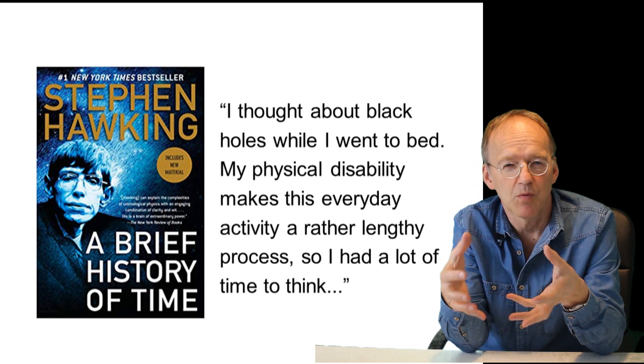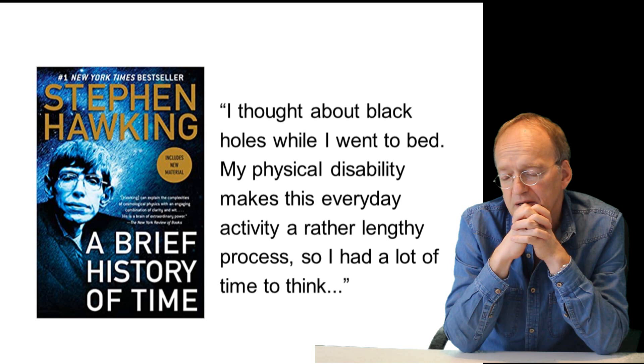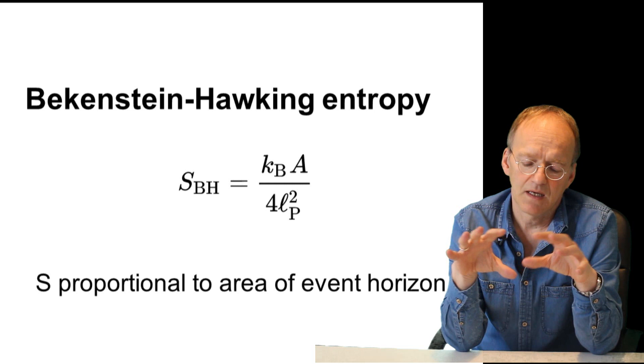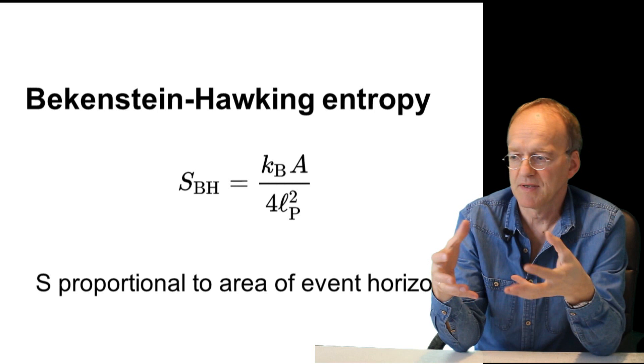After that in his book he talks about what is considered his most important discovery, the Bekenstein Hawking entropy. Hawking argued that the surrounding of a black hole, the event horizon, cannot decrease, and that reminded him from a quantity known in thermodynamics as entropy, which always increases.